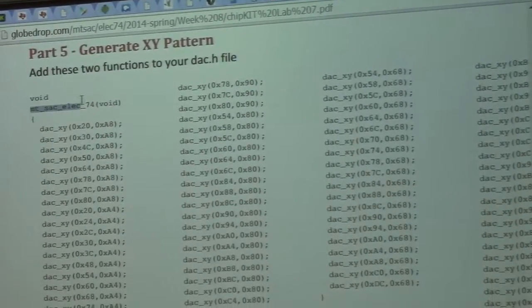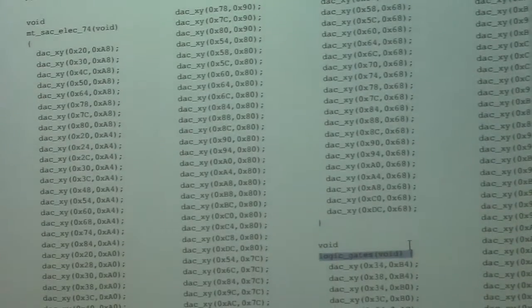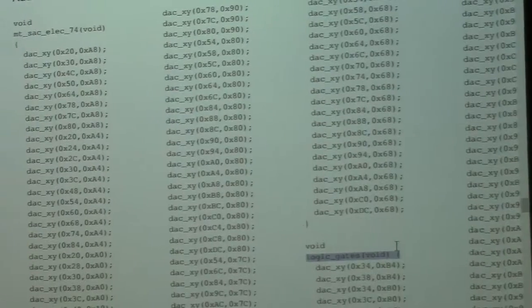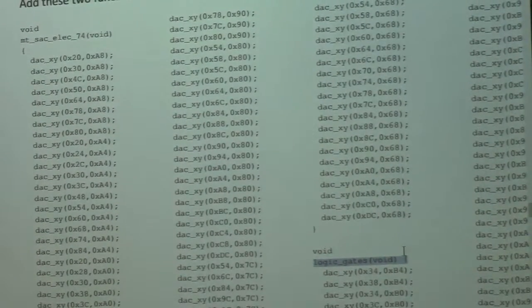They're hard to see. One is called Mt. SAC at like 74, and the other one is called logic gates. And I think everybody's seen the lab where it displays the two images. So these are basically just all the XY locations to draw those two images.